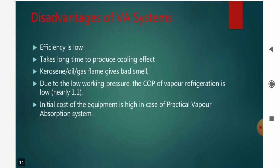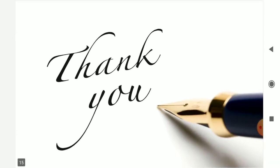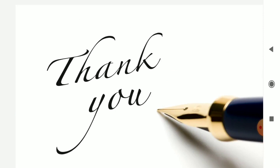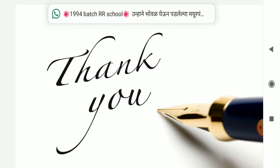Every system has some disadvantages. Due to vaporization of ammonia and hydrogen, the efficiency is somewhat low as compared to the Vapor Compression System. It takes a long time to produce the cooling effect. For heating purposes, gas, oil, or kerosene can be used, but bad smell is also produced. Due to the low working pressure, the COP of refrigeration is also low. The initial cost of the equipment is high. That's all friends about the Vapor Absorption System and Vapor Compression System — we will meet with a new topic in Applied Thermodynamics. Thank you very much.